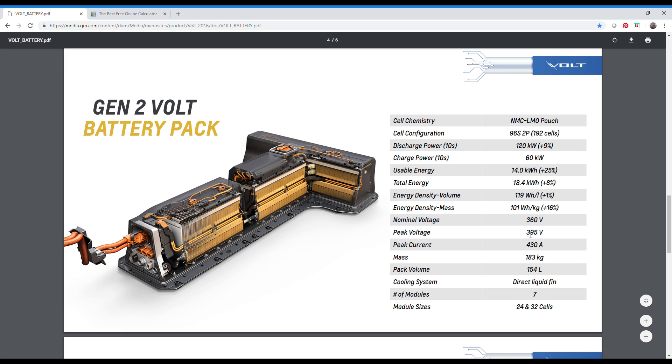It also says that the peak voltage is 395 volts. Now there are 96 cell groups, and that's listed right here as 96S and 2P, and so that's why I said 96 cell groups.